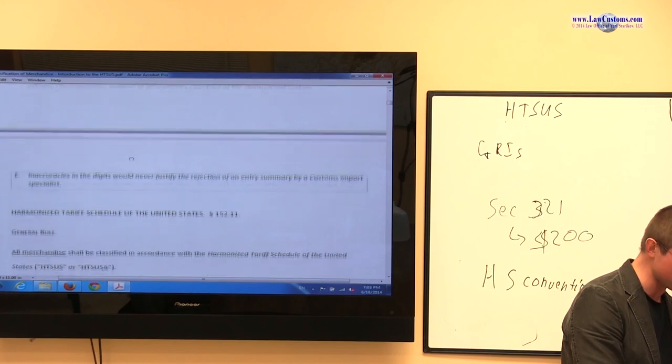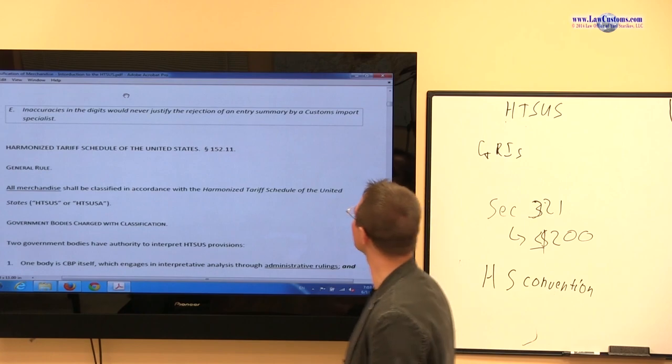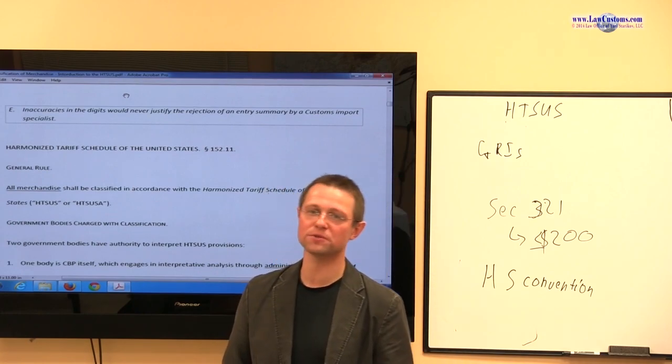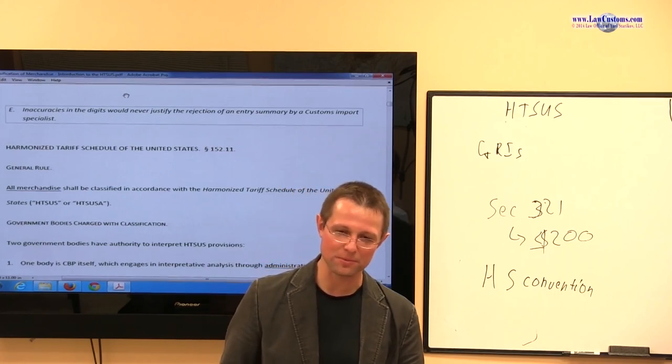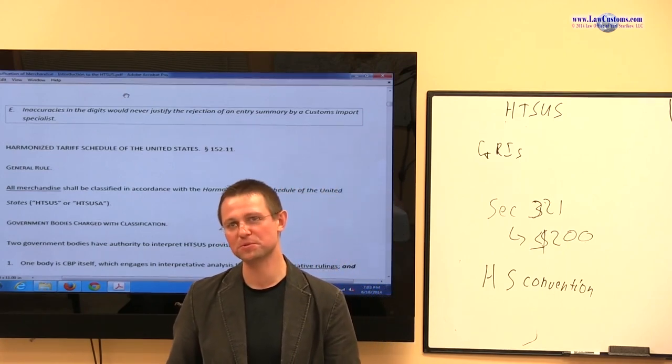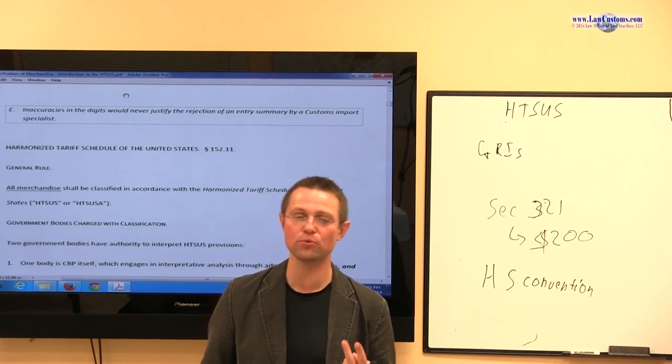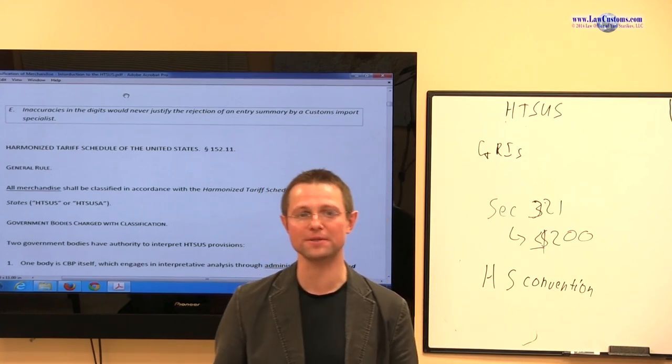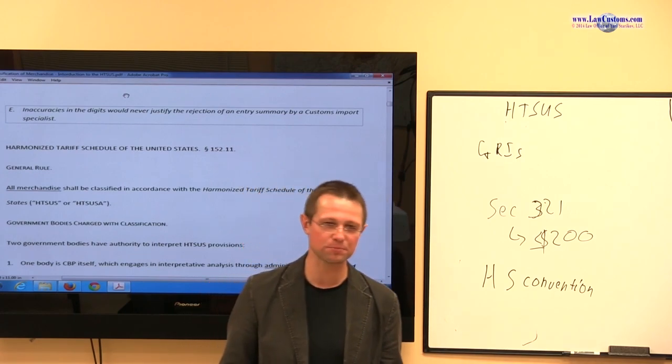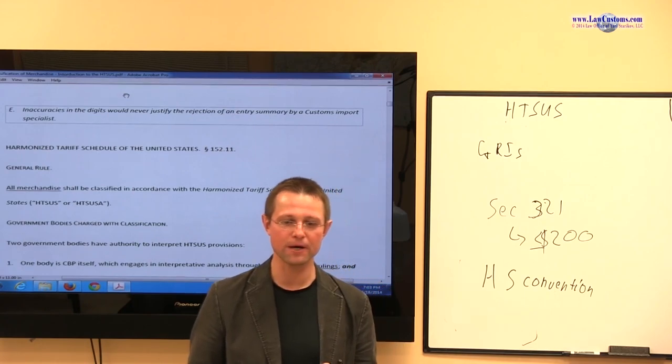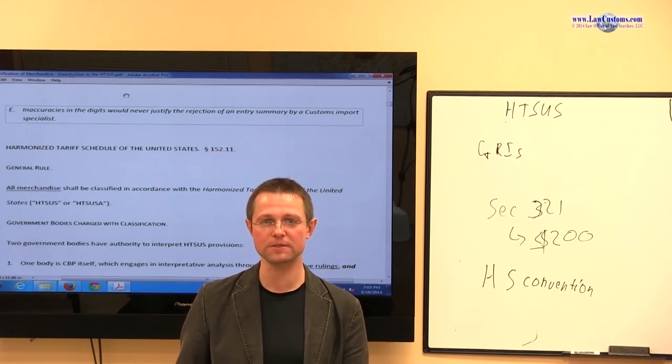Next, inaccuracies in the digits would never justify the rejection of an entry summary by customs import specialists. Well, we all know that the primary purpose of customs and border protection is, they have dual purpose, at least this is in their open statement, is to secure nation borders, such as protection against terrorism, and also to protect the revenue of the United States.